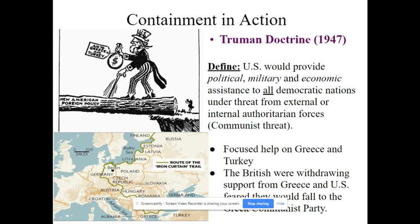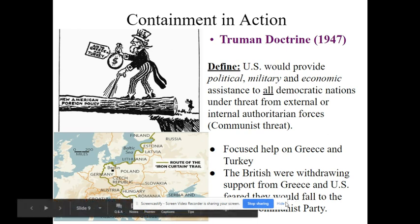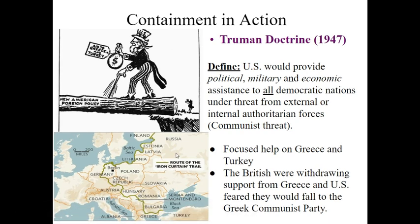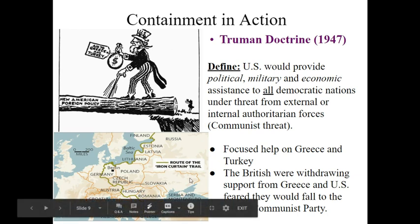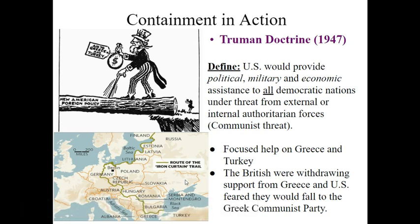This plan is a little bit different than the Marshall Plan, which we'll get into next. The Truman Doctrine was focused basically on Greece and Turkey. On the map here, you can notice where Greece and Turkey are — they're very close to that Iron Curtain. There's not a whole lot of room for Greece down there, and Turkey is slightly behind it. So protecting these two countries is incredibly important for the United States.